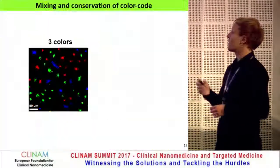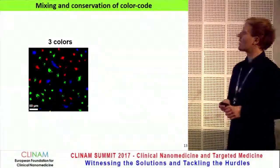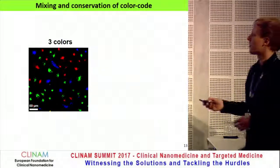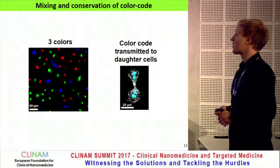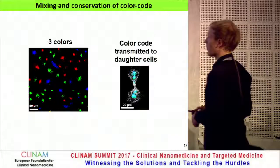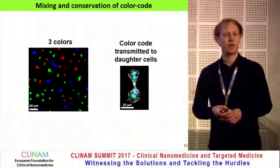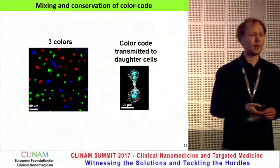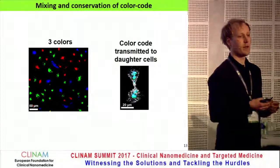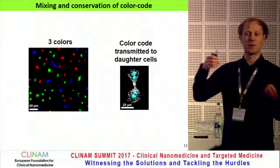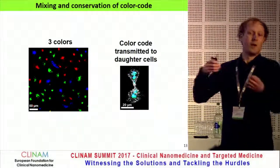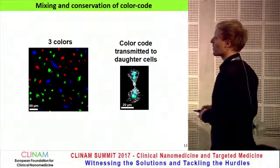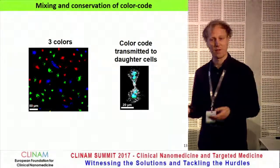That's our basic setup. We can mix cells of different colors without any problem, and importantly, these color codes are quite nicely transmitted to daughter cells. Here you can see cyan-labeled cells in mitosis, and these nanoparticles are separated equally between the two daughter cells while the color code itself is maintained.